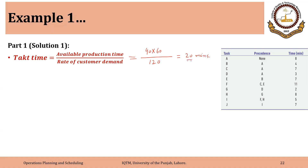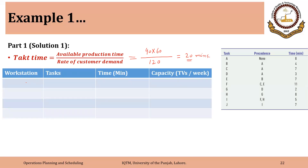This 20 minutes means that the cycle time or standard time or operation time at any workstation should not be greater than 20 minutes — so the maximum allowed cycle time is 20 minutes. At workstation one, we can combine the first three tasks: A, B, and C. Combining them gives a total time of 8 plus 4 plus 7, which is 19 minutes. We cannot add task D to workstation one because the cycle time would exceed 20 minutes, which is not allowed.